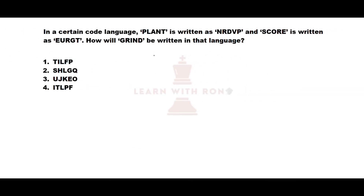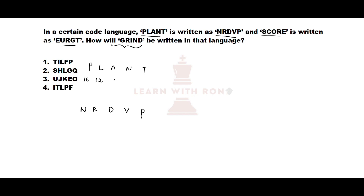Let's see this coding and decoding question. PLANT is coded as NRTVP and SCORE is coded as a certain sequence. We need to find how GRIND is coded. Taking PLANT: P L A N T. The corresponding numbers are P=16, L=12, A=1, N=14, T=20. The coded form is N=14, R=18, T=... wait — the code is N R D V P, where N=14, R=18, D=4, V=22, P=16.